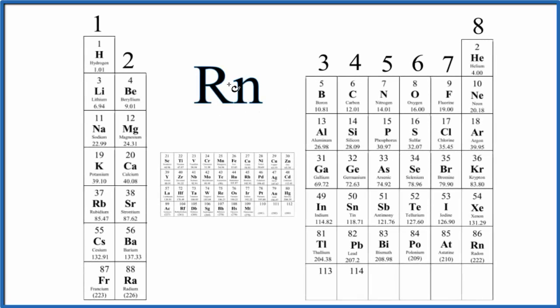In this video, we'll write the Lewis structure for Rn. This is radon. The first thing we need to do is figure out the number of valence electrons.